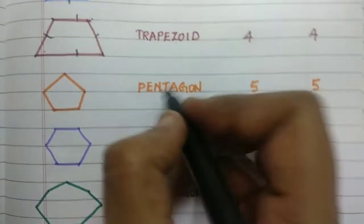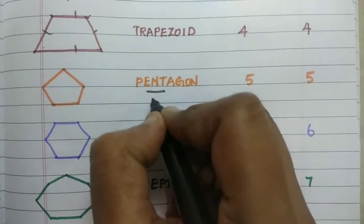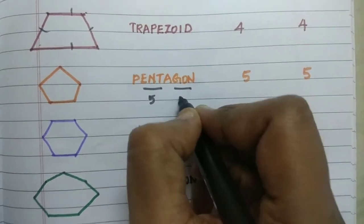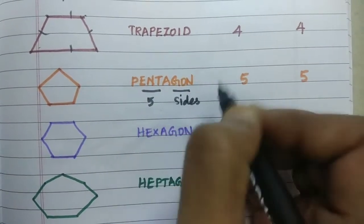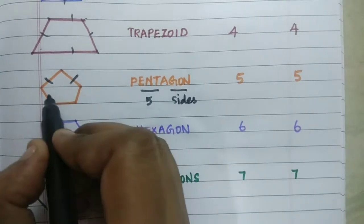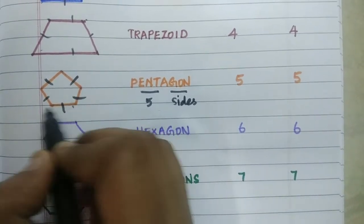Next is a pentagon. Pentagon means penta means five and gon means side. So five sides. So it has five sides and five vertices.